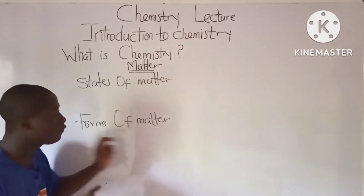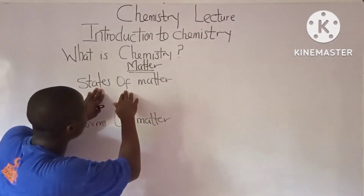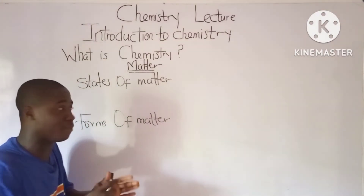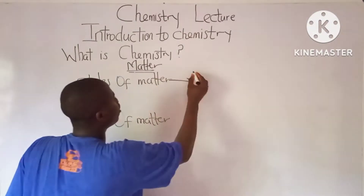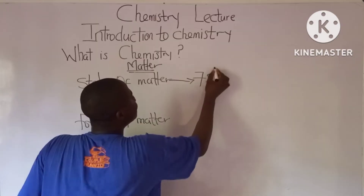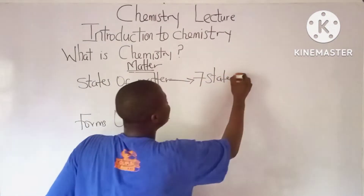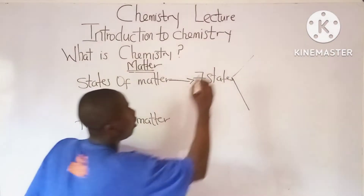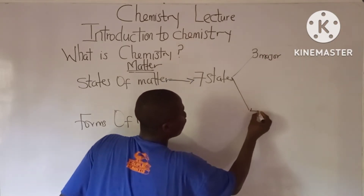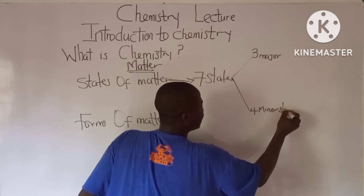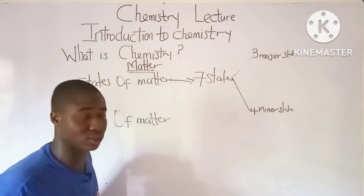States of matter are different from forms of matter. We have seven states of matter in total, divided into two groups: three major states and four minor states.